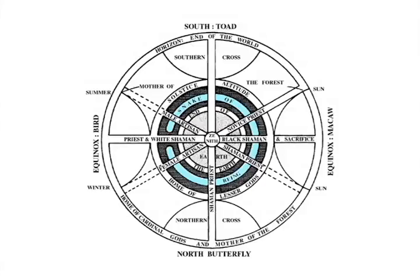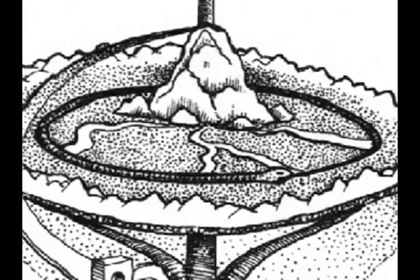The cosmology of the Warau of the Orinoco Delta also features a serpent of being that surrounds their world. Here we see the Norse serpent that surrounds Midgard, the inhabited world of Norse cosmology.